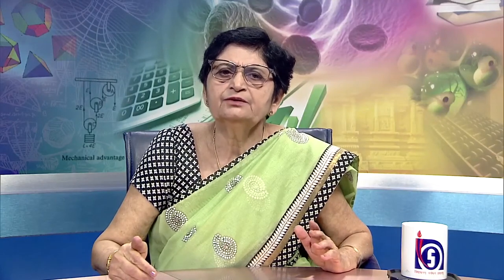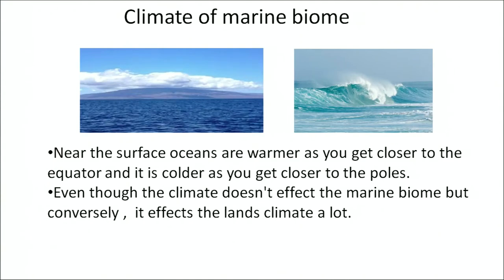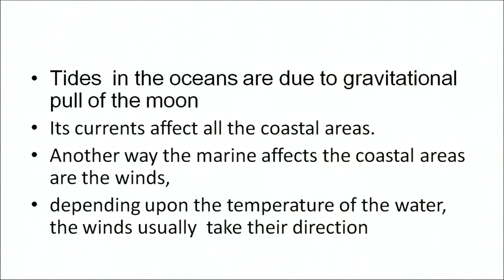The marine biome is differentiated on the basis of salinity, which is nearly 3.6% in seawater and is quite constant. The temperature variation is much less in the sea than on land. Hydrostatic pressure is due to the water column and increases with the depth of the ocean — it is one atmosphere at the surface and about 1000 atmospheres at the greatest depth. Near the surface, oceans are warmer closer to the equator and become colder towards the polar regions. The climate does not greatly affect the marine biome, but conversely it does affect the land climate significantly. Tides in the oceans are due to the gravitational pull of the moon, and their currents affect coastal areas.